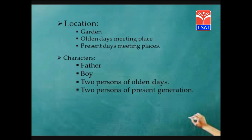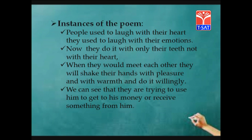For the first three stanzas: the first theme is remembering the way people used to behave and interact with each other; the second theme is comparing it with how people interact with others now. The third step is location — where the characters are placed. It is in a garden: olden days meeting places and present day meeting places. The fourth step is characters: a father or old man, a boy, and two persons each representing the olden days and the present generation.